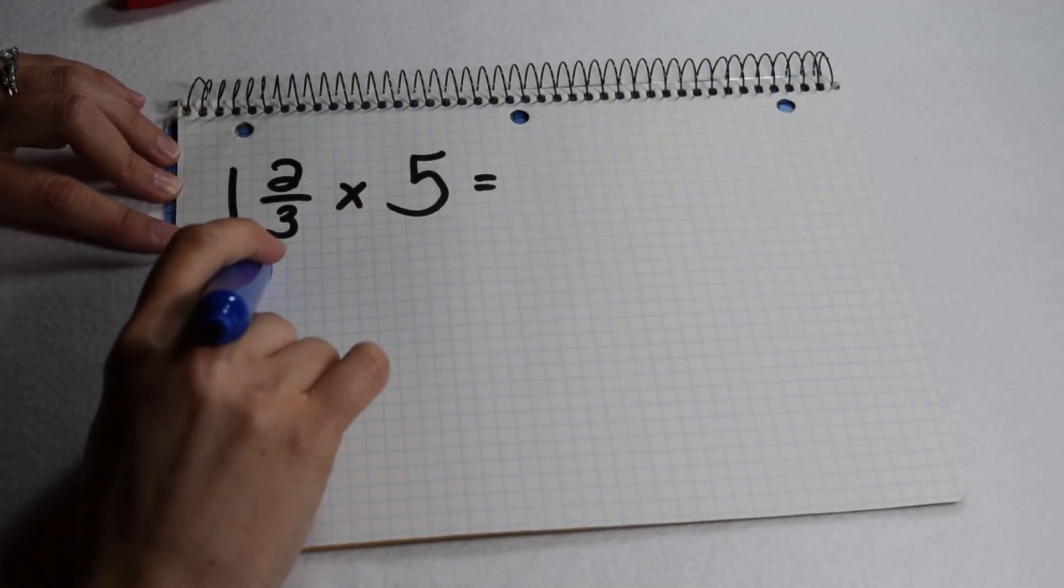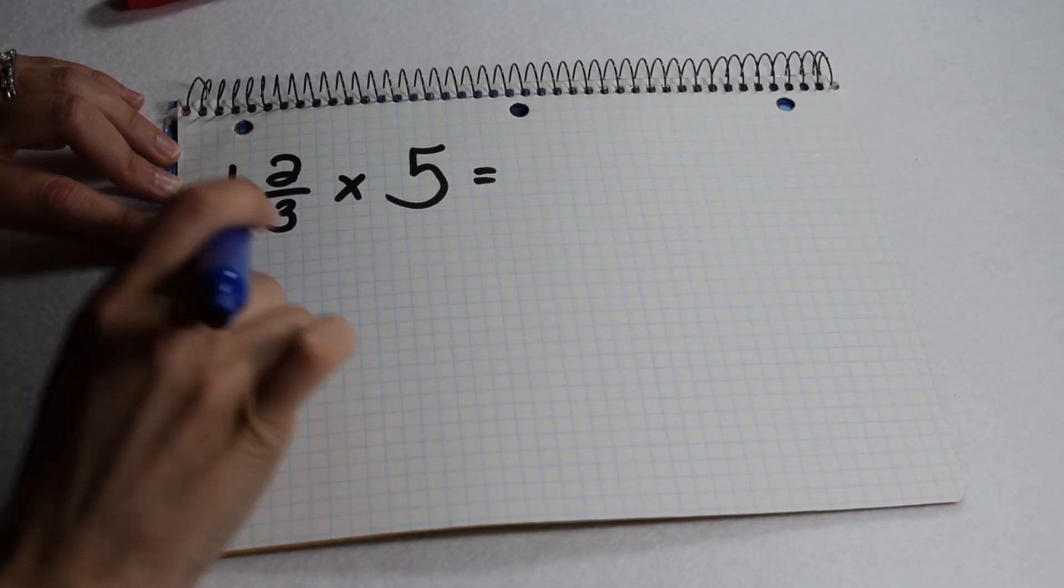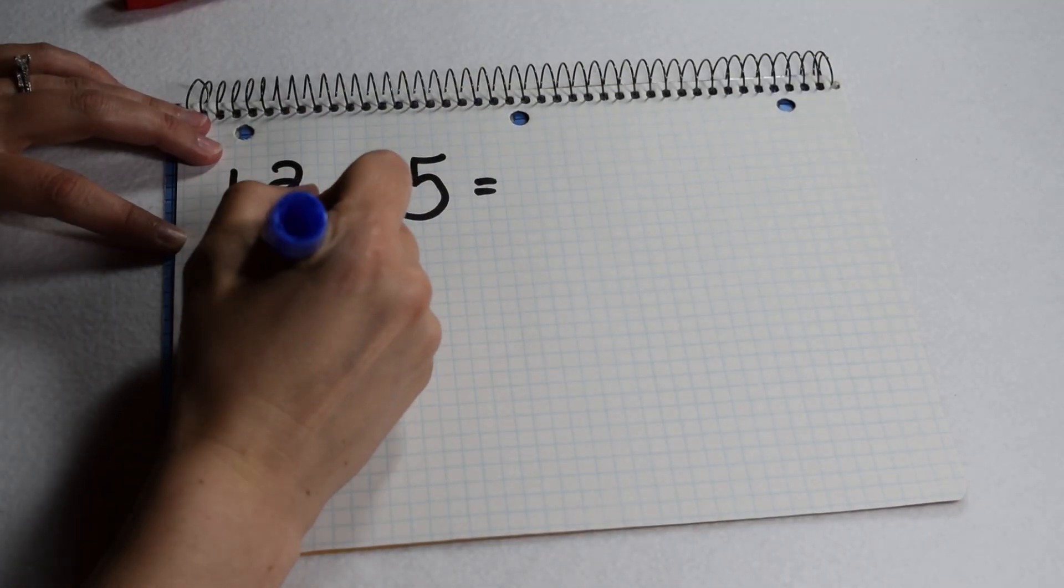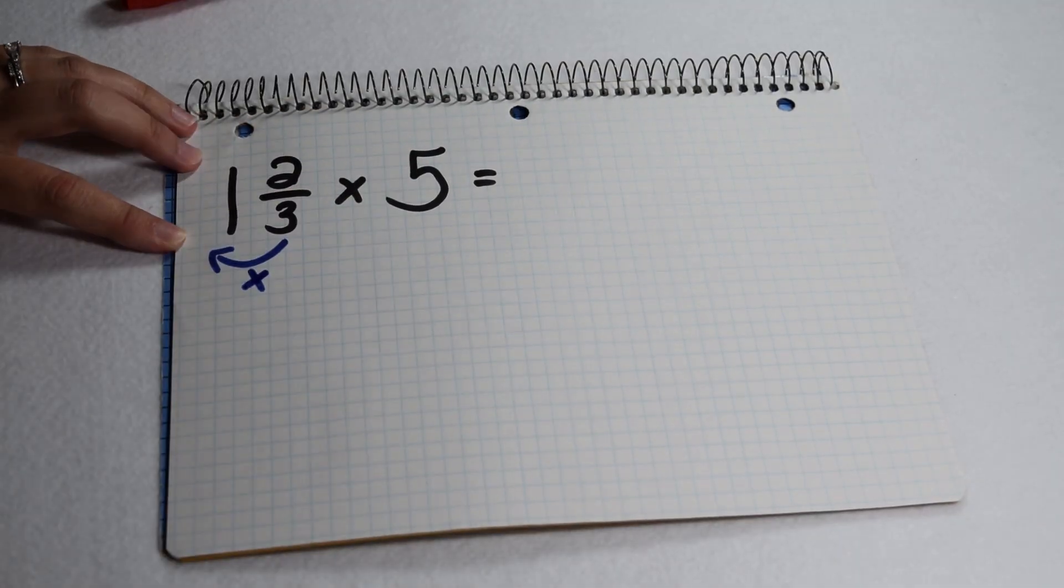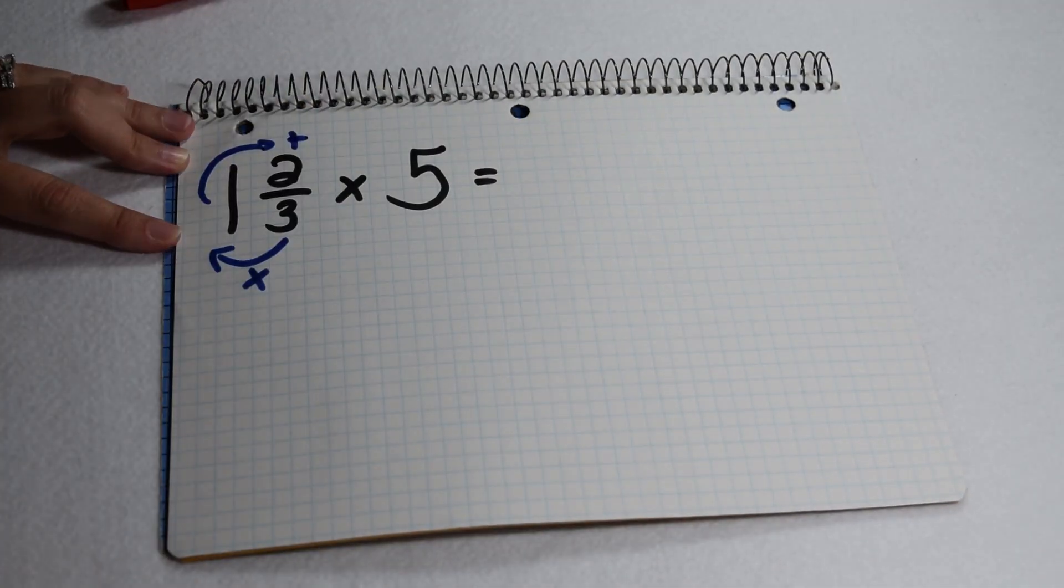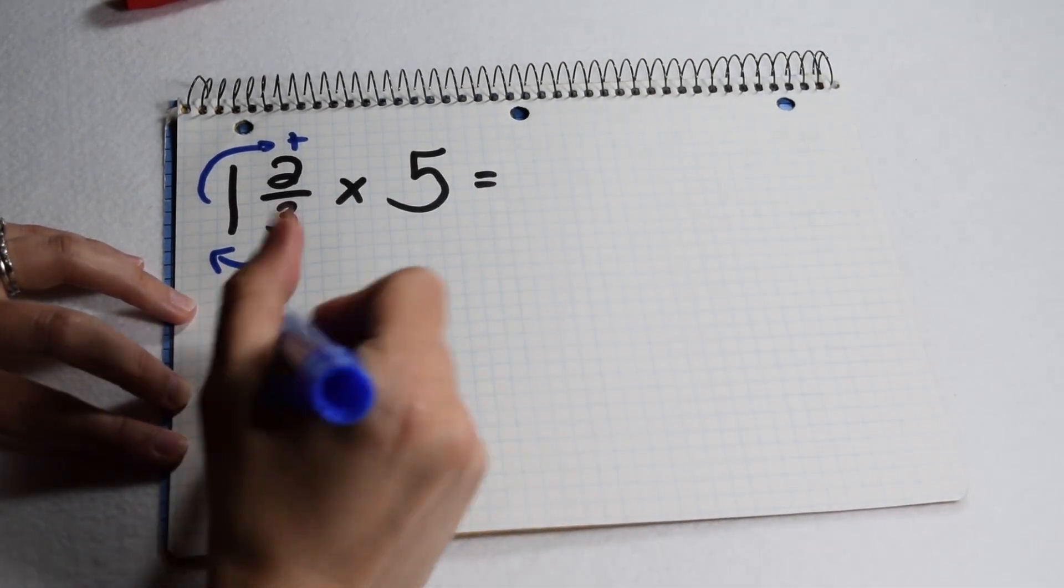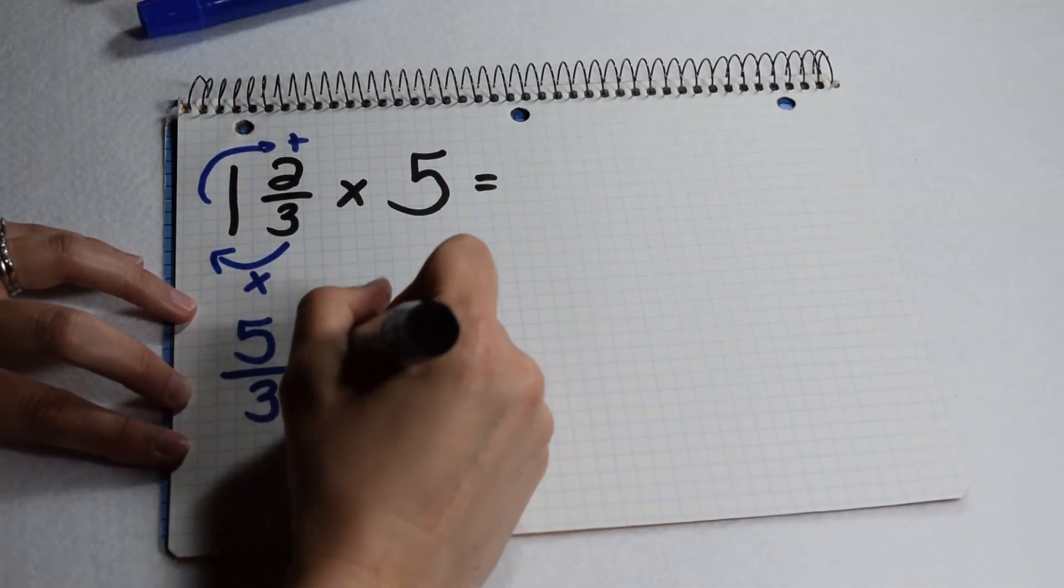To multiply a mixed number by a whole number, I first need to change them both to improper fractions. To change my mixed number into an improper fraction, I multiply my denominator times my whole number. So three times one gives me three, and I add those three pieces to the two I already have in the numerator. That gives me a total of five pieces, and my denominator of three stays the same.